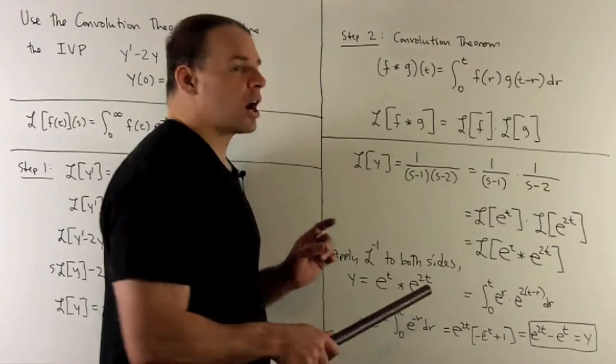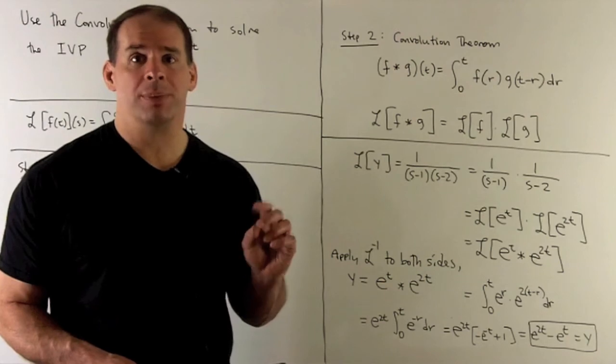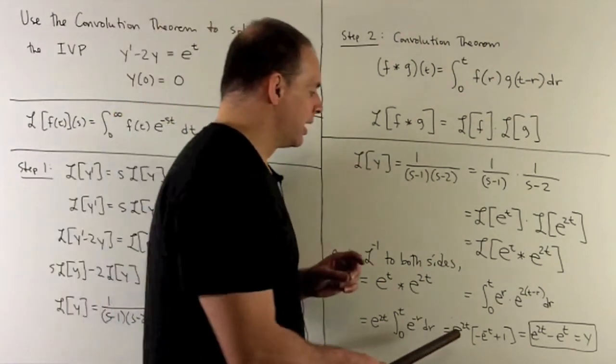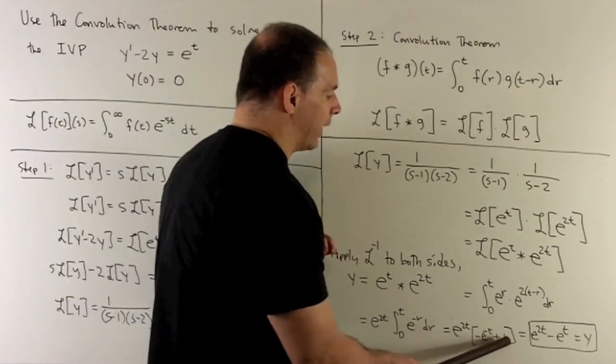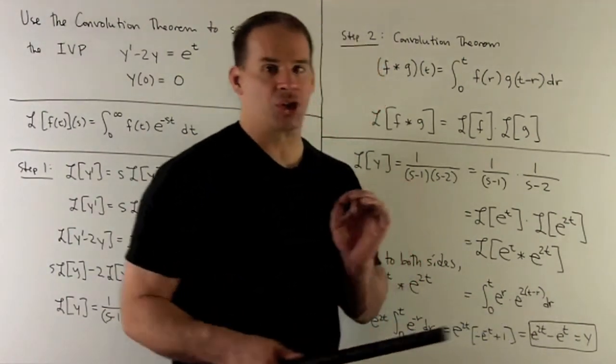The antiderivative of e to the minus r is just minus e to the minus r. We evaluate at t and 0, take the difference. Then, when we push through the e to the 2t, what happens? We get e to the 2t minus e to the t as our solution.